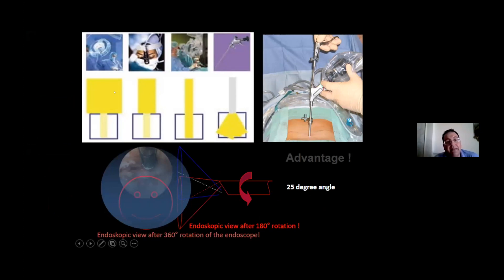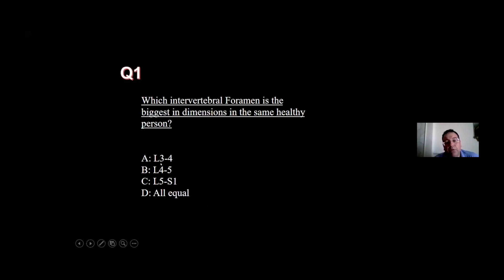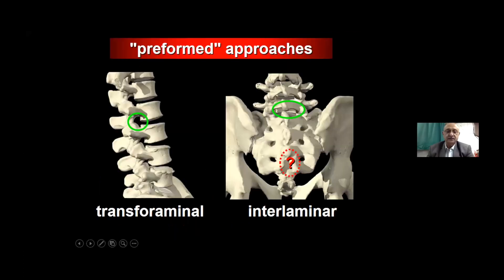You can see that we know the difference between room light, headlight, microscope, and the endoscopic view — the endoscope provides us more. This is a 25-degree angle endoscope that we use from the world company.